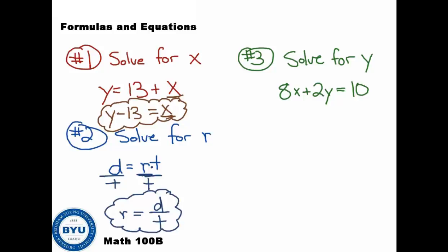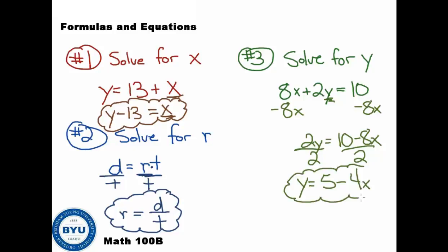On number 3, we want to get y by itself. That's our goal. And so to get y by itself, we're going to need to take care of this 8x. So minus 8x to both sides. And I get 2y equals 10 minus 8x. Okay, looking good here. Now we just need to get rid of this 2. It's being multiplied. So to multiply by 2, we would divide by 2 to both sides. And we get y, let's see, 10 divided by 2 is 5. And 8 divided by 2 is 4x. That would be our answer for that one.